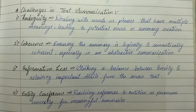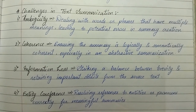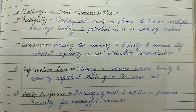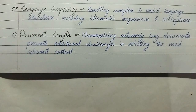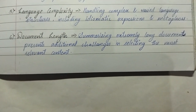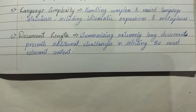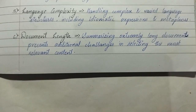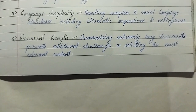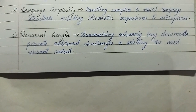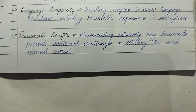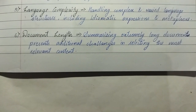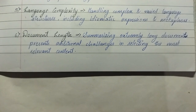Fourth is entity co-reference — resolving references to entities or pronouns correctly for meaningful summaries. Fifth is language complexity — handling complex and varied language structures, including idiomatic expressions and metaphors. Sixth is document length — summarizing extremely long documents presents additional challenges in selecting the most relevant content. So this was it for text summarization.